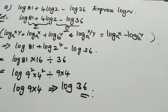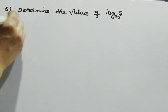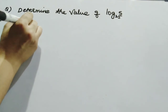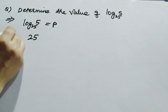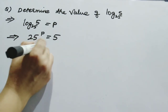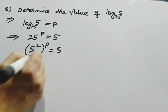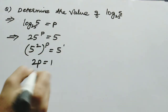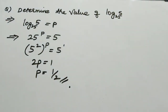Let us do one more problem: determine the value of log 5 base 25. Convert to exponential form: log 5 base 25 equals p means 25^p equals 5. Since 25 equals 5², we get 5^(2p) equals 5^1. Bases are same, so 2p equals 1, giving p equals 1/2. You can determine the value by solving in this method.